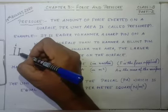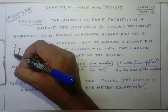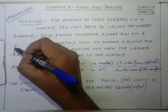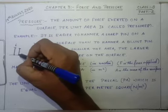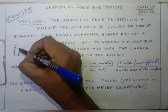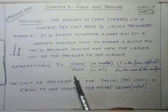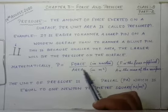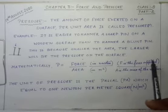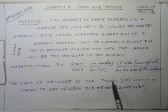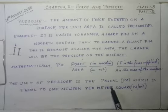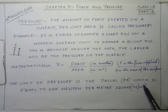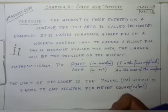And more the area, less pressure will be applied. This means if the area of cross-section is less, more pressure will be applied, and if the area of cross-section is more, less pressure will be applied. Mathematically, pressure equals force divided by area. The unit of force is Newton and the unit of area is meter square. The unit of pressure is Pascal, denoted by Pa, which equals 1 Newton per meter square.